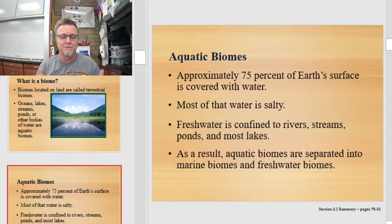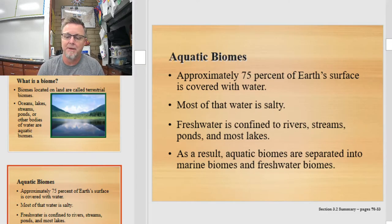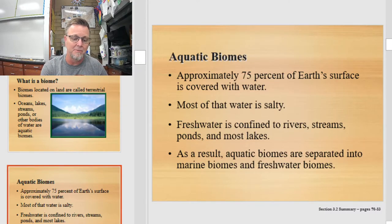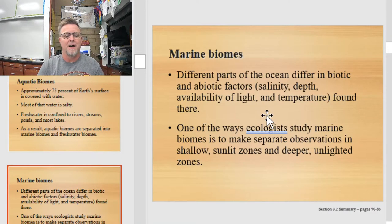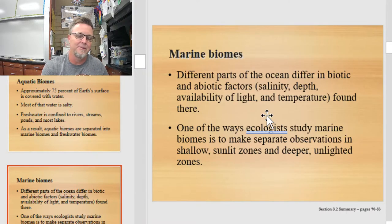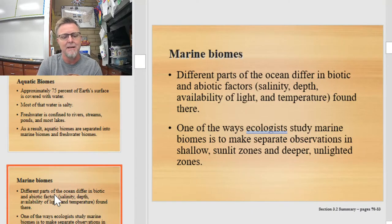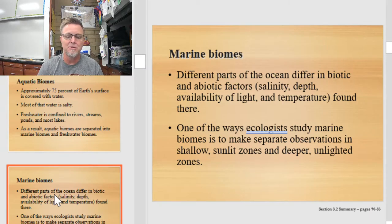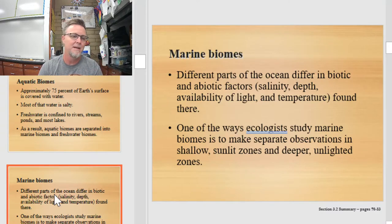As a result of this differentiation between salty and freshwater, aquatic biomes are separated into two terms: marine and freshwater biomes. The marine biomes are the salty ones, and freshwater biomes, you guessed it, they're fresh. The marine biomes are basically all parts of the ocean. The ocean is not all the same thing — different parts differ in temperature, depth, and salinity.